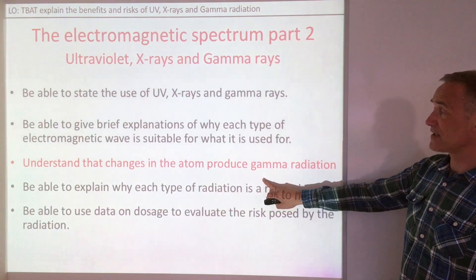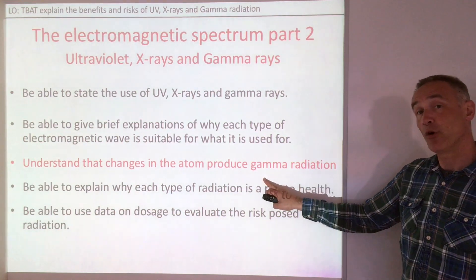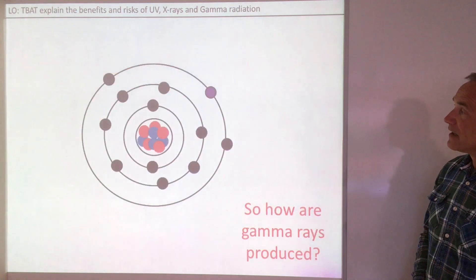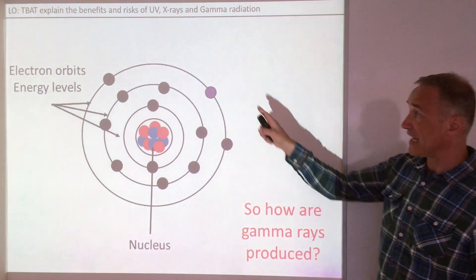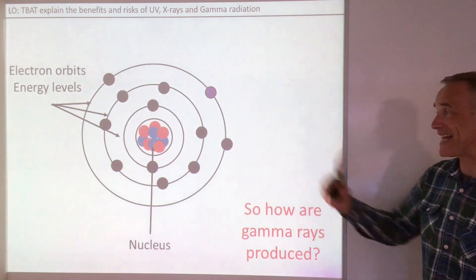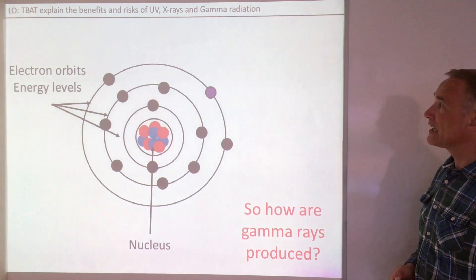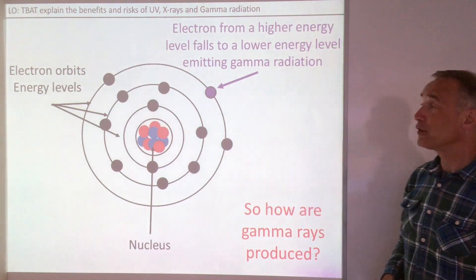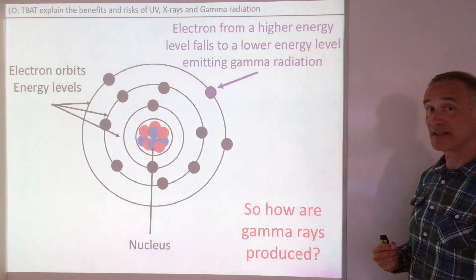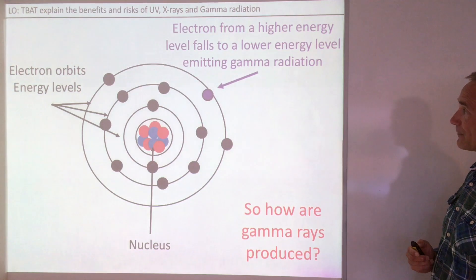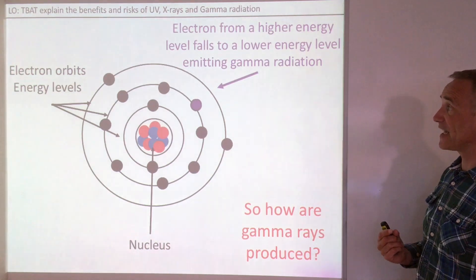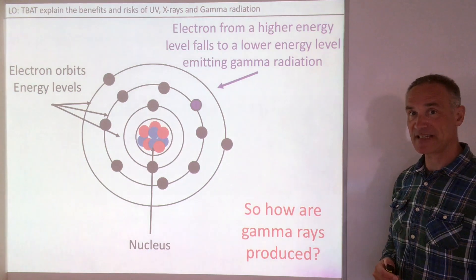The next point — understanding that changes in the atom produce gamma radiation — also links back to the radioactive unit in physics. We have our nucleus with electrons orbiting it in energy levels. Electrons can fall from a higher energy level to a lower energy level, and when they do that they emit radiation in the gamma spectrum. The electron falls to a lower energy level losing energy, and that energy gets transferred into gamma radiation.